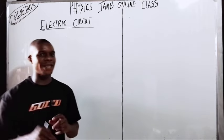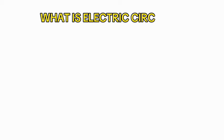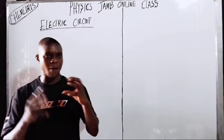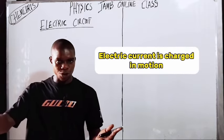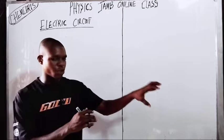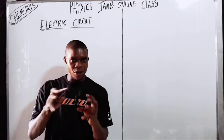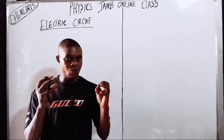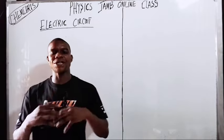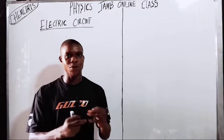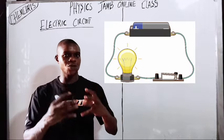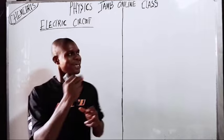So let's get started. First, what is an electric circuit? What do you understand by electric circuits? An electric circuit is the pathway in which electric current flows in order to be converted to a profitable use. That is the reason why we enjoy lights in our homes — because those electric currents are converted to a profitable use.